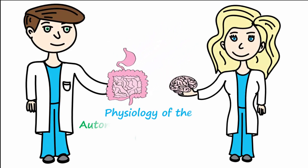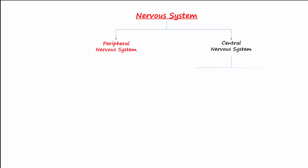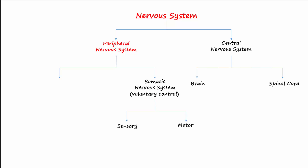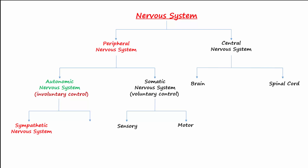Our topic today is the autonomic nervous system, or ANS. Remember that we have one nervous system which can be divided into the peripheral nervous system and the central nervous system. The peripheral nervous system can be divided into the somatic nervous system, over which we have voluntary control, and the autonomic nervous system, or ANS, which we do not control voluntarily.